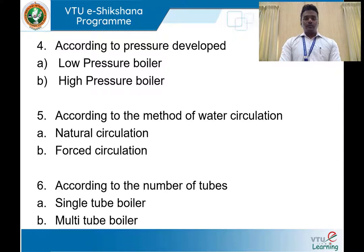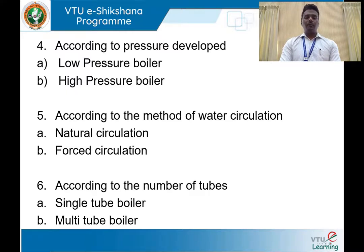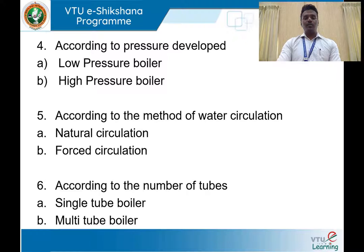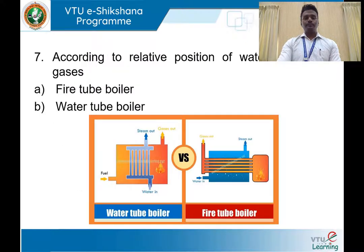A boiler can also use a single flue tube or multiple flue tubes. Depending on that, we have single tube and multi-tube boilers. For example, the Cornish boiler, which has only one flue tube, is a best example of a single tube boiler. Coming to multi-tube boilers, the Babcock and Wilcox boiler and Lancashire boiler, which contain more than one tube, are best examples.